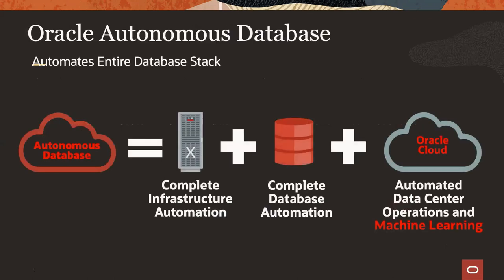We have our autonomous database cloud service — our big name product in our cloud. The autonomous database automates everything. When you create that autonomous database, it is created on top of one of our Exadata systems in the cloud. It's completely automated; a lot of things are done for you that you'd normally have to do with a regular database. Combining all these tools, we have a fully managed, fully running, fully autonomous database in the cloud.